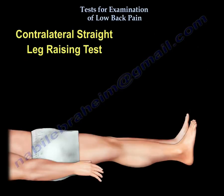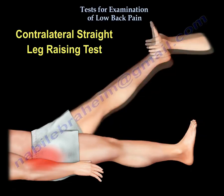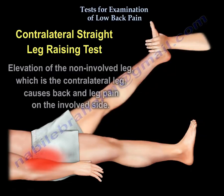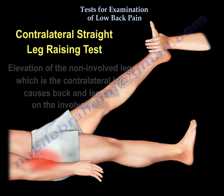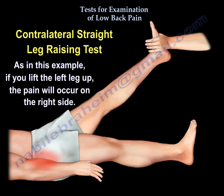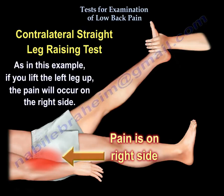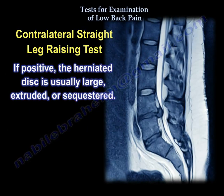The contralateral straight leg raising test: elevation of the non-involved leg causes back and leg pain on the involved side. As shown in the picture, if you raise the left leg, the pain will occur on the right side. If this test is positive, the herniated disc is usually large, extruded, or sequestered.